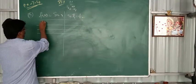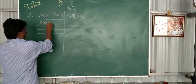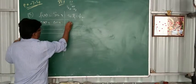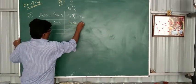Next f dash of x, sin x, cos x. So cos of pi by 4, 1 by root 2.